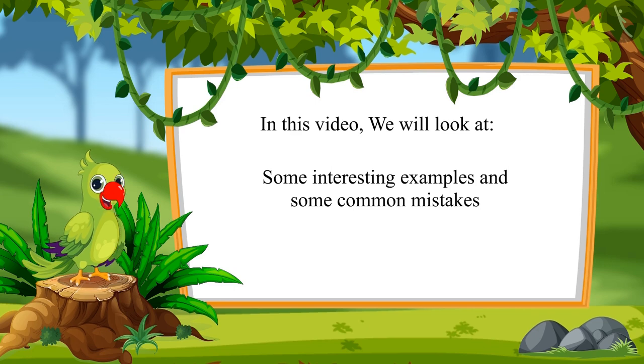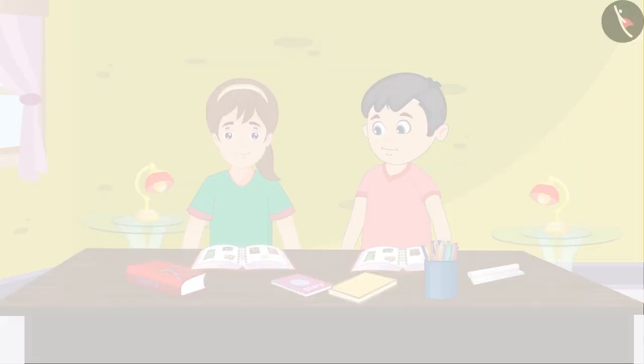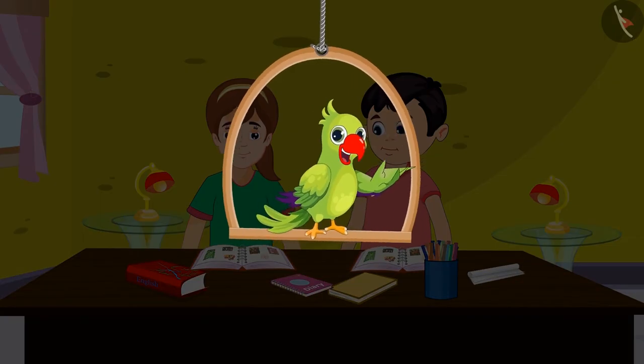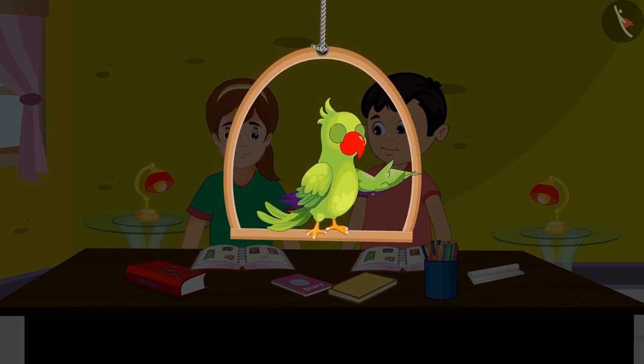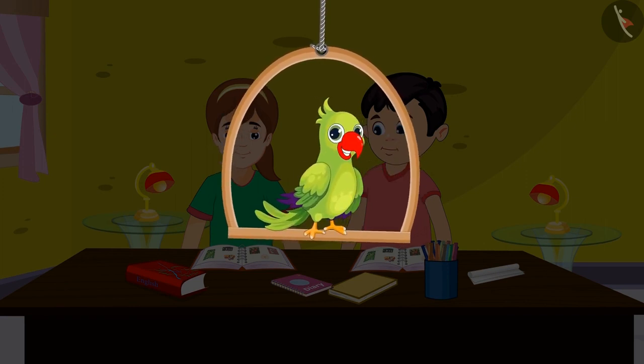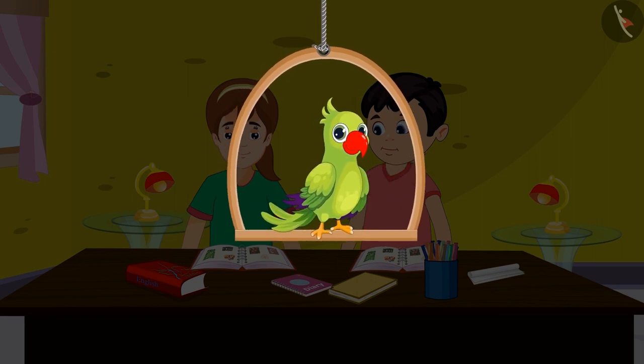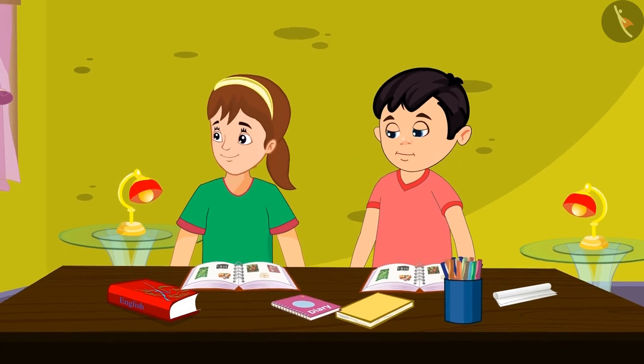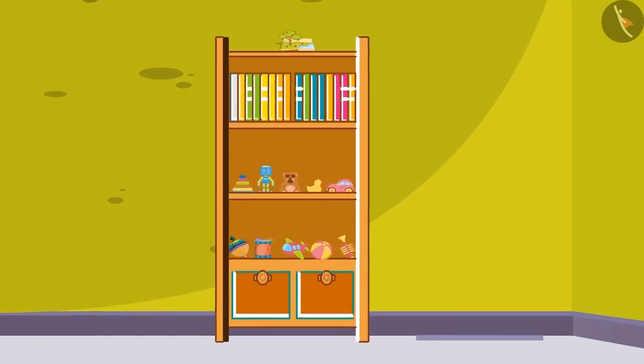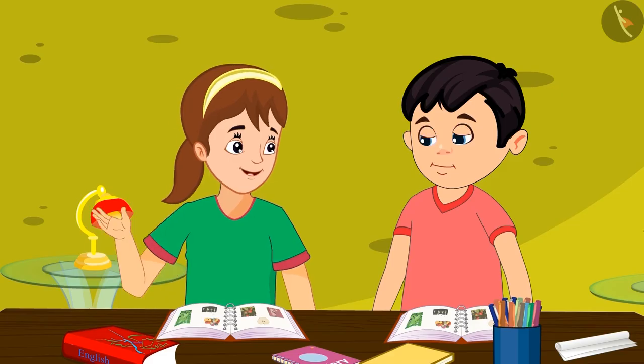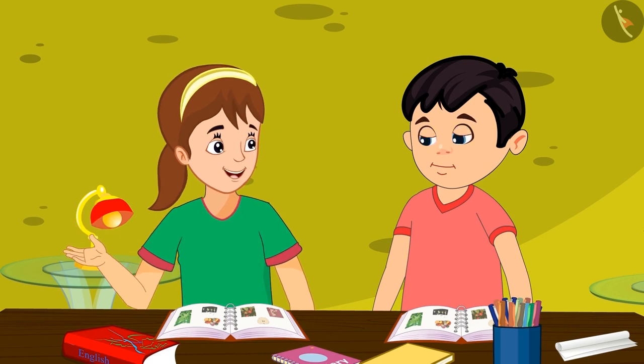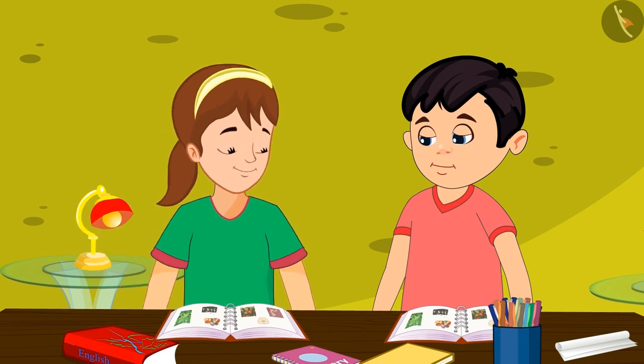Chotu and Auntie are studying together at Chotu's home. They have studied about ones and tens yesterday at school. Just then Auntie happens to look at the toys kept in Chotu's cupboard. Oh wow, you have so many colorful toys! How many toys would these be, Chotu?